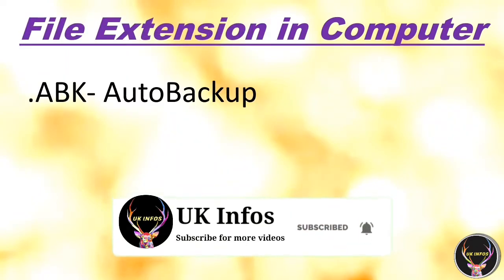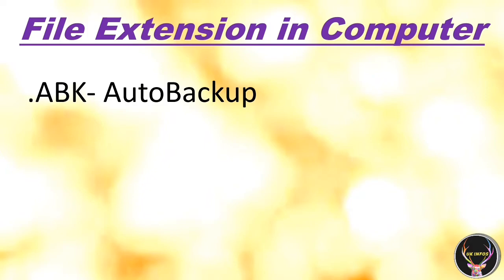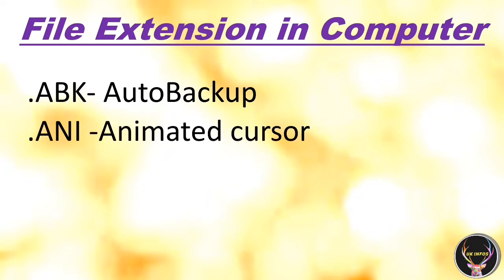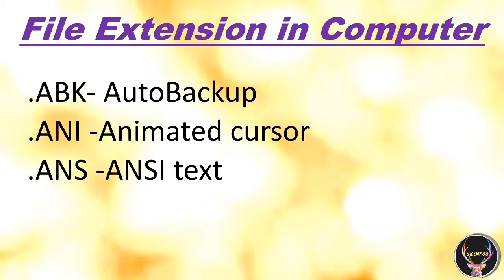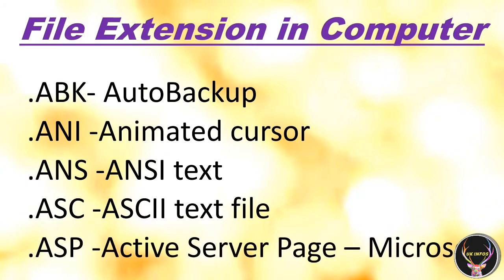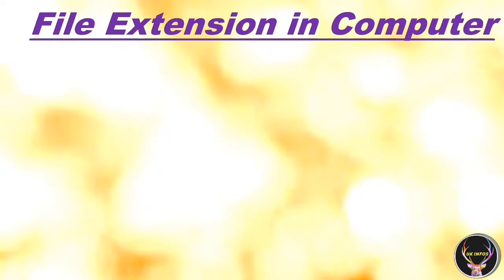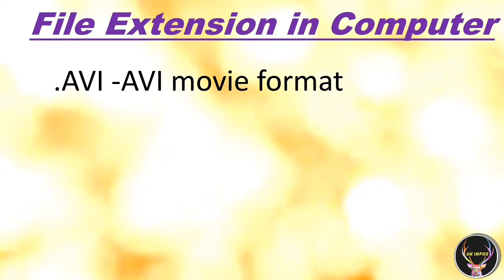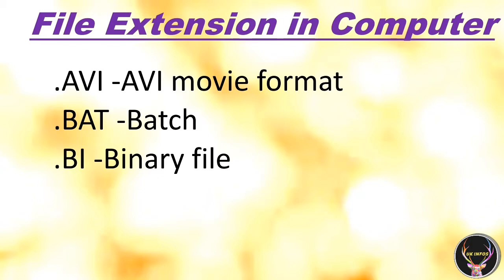.ABK – Auto Backup. .ANI – Animated Cursor. .ANS – ANS Text. .ASC – Active Text File. .ASP – Active Server Page in Microsoft. .AVI – AVI Movie Format. .BAT – Batch. .BI – Binary File.